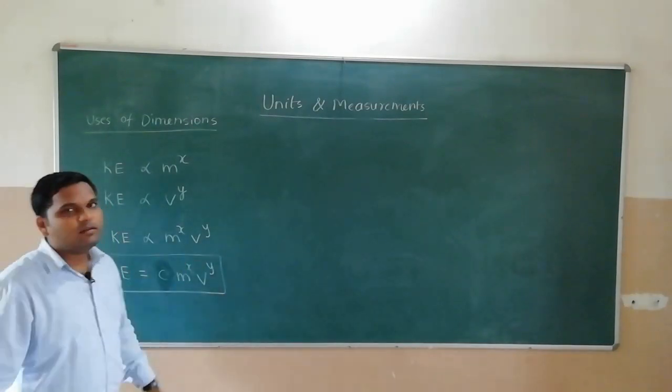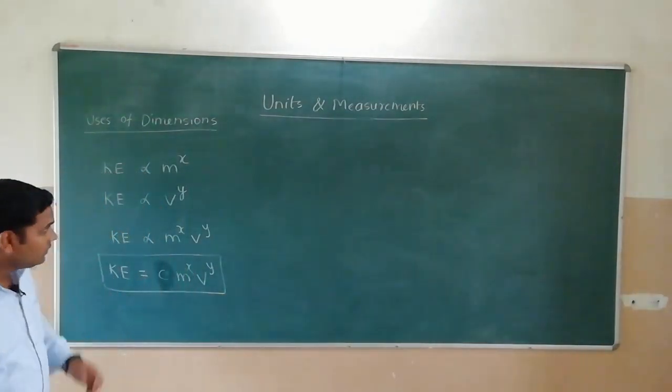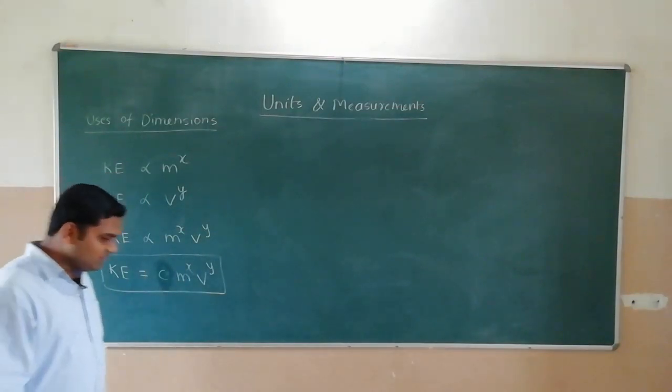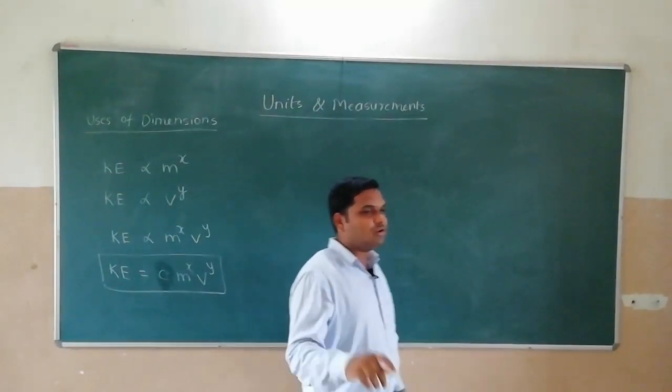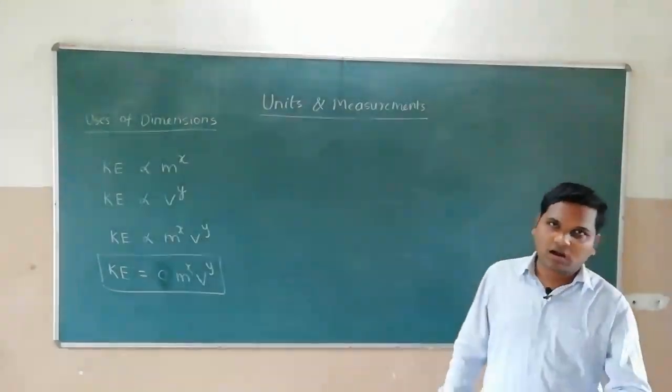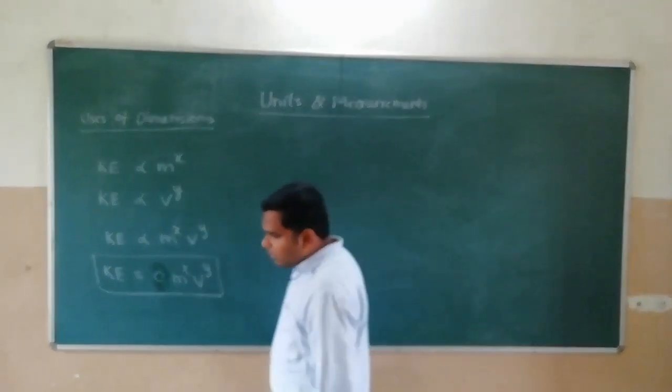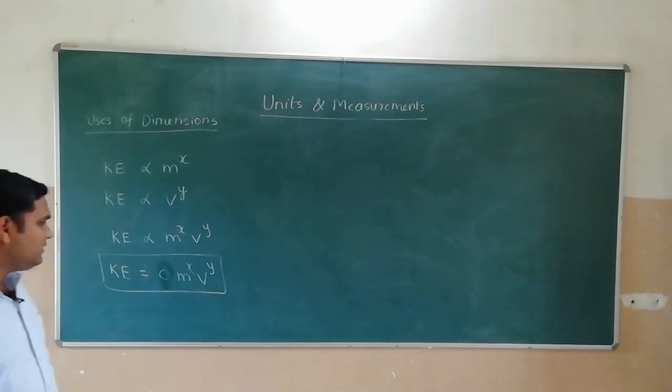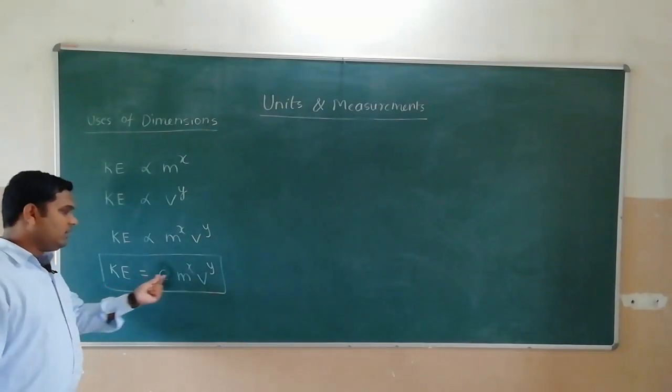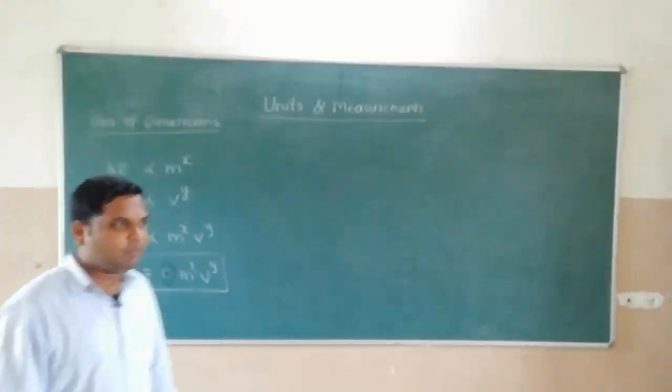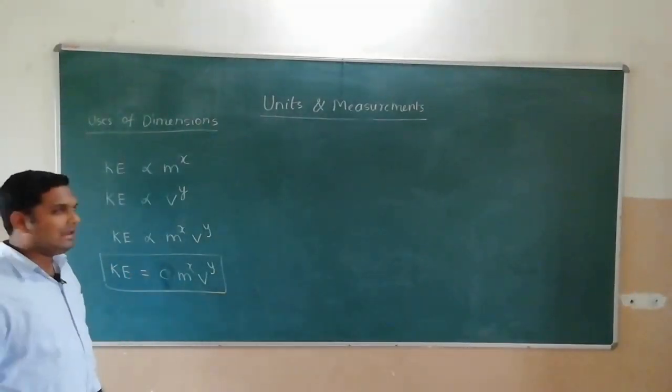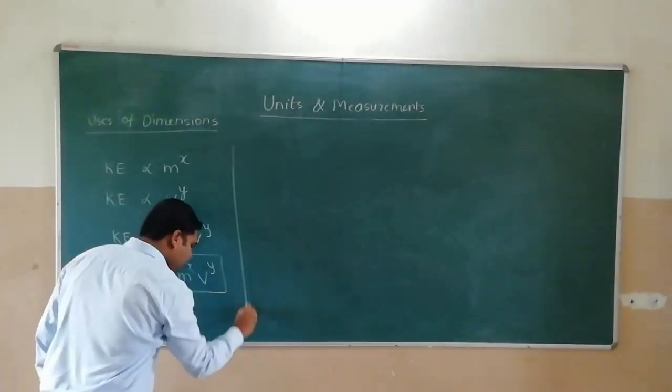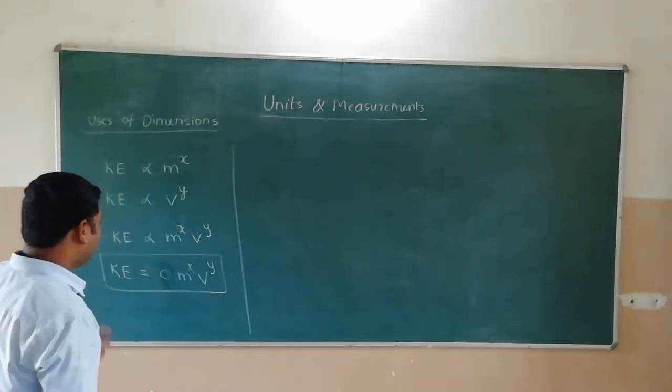Yeh ha aapna ko formula dhunna hai abhi. So, abhi iske andar kitne terms hai? Constant ko chod do. Constant means wo ek number hoga. Wo ek physical quantity nahi hai. Toh constant ko chod ke kitna symbols hai? Dekho equation mein. We have three symbols. One is kinetic energy, dusra mass aur tisra kya hai? Velocity. Toh iska dimensions likhi lenge hain apan.